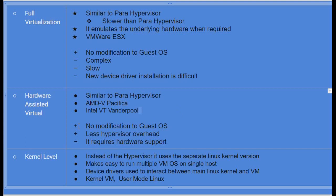Hardware-assisted virtualization achieves virtualization with the help of hardware — it is similar to para hypervisor. Examples include AMD Pacifica, Intel VT (Vanderpool), and Microsoft Hyper-V. No modification of the guest operating system is required and there is less hypervisor overhead, but it requires hardware support. At the kernel level, instead of a hypervisor, a separate Linux kernel version can be used. This makes it easy to run multiple VM operating systems on a single host. Device drivers need to interact between the main Linux kernel and the virtual machine, and this includes kernel virtual machine and user mode Linux.